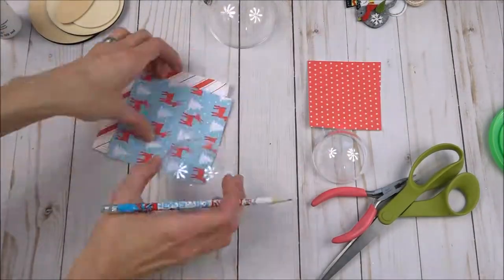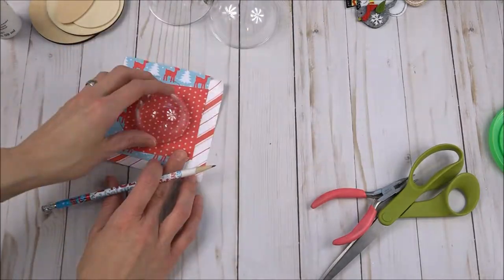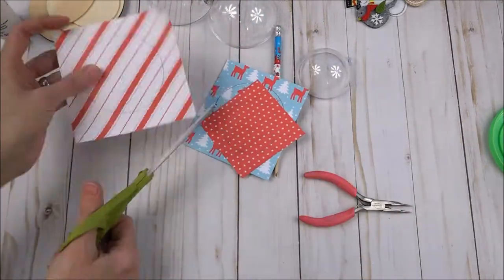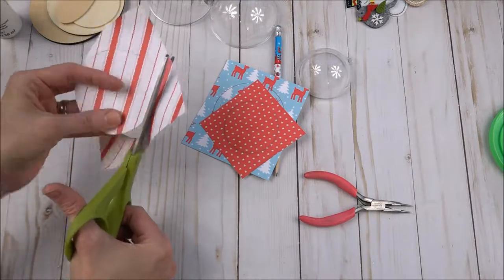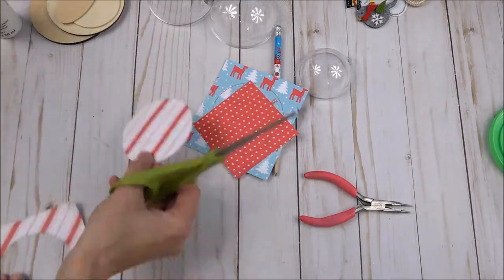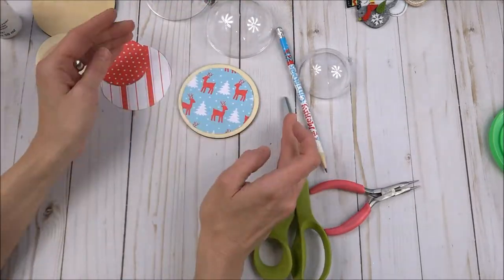First, you'll need to gather your items and decide what each snow globe will look like. Choose some really cute paper and then trace around each dome. Cut the circles out and glue them to your round discs.